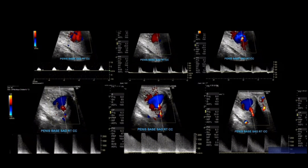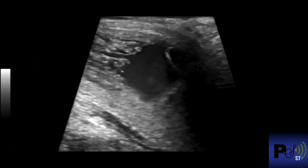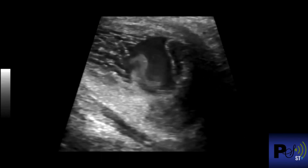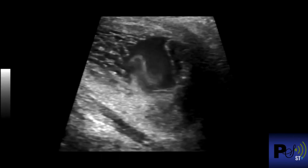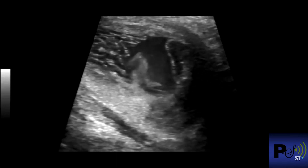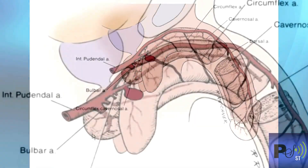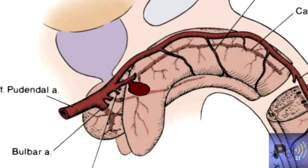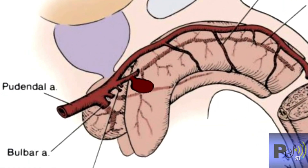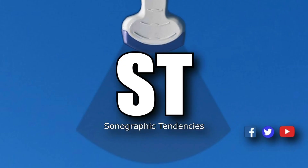Here is a clip in real time — you can see fluid being pumped in there and swirling around, and that's what gives that typical yin-yang pattern. This turned out to be a pseudoaneurysm of the pudendal artery or the proximal cavernoso artery. Hope you guys enjoyed that one — see you later.